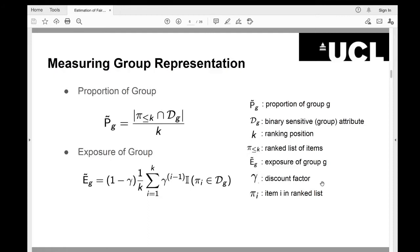So, to measure the group in a ranking, we could use proportion of group representation, which is computed as the number of items belong to some particular group G in a rank K. Or, we might use exposure of group, which is continuous sum over a ranking for items that belong to a particular group. Let me also briefly explain the symbols. P tilde G represents the proportion of group. Pi less than or equal to K represents the ranking of items that have rank less than or equal to K. DG denotes the binary sensitive group attribute of an item. And gamma is a discount factor. It's a number between 0 and 1. It reduces over the ranks with a factor of rank minus 1.